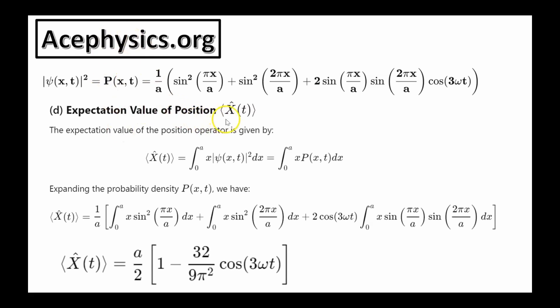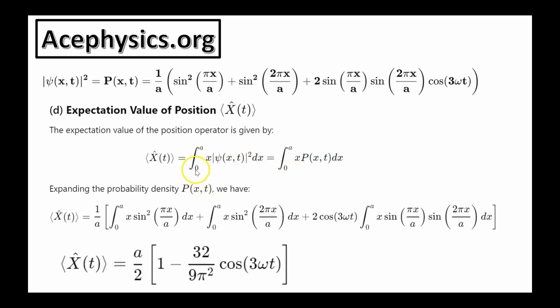Part D asks for the expectation value of the position operator — the average value of position. Unlike average energy, the average value of position does change over time. For this one-dimensional problem, we take the integral from 0 to A of x times psi squared dx. This equals x times the probability of x, which is intuitive: psi squared gives the probability density, so multiplying by x gives the average position. Substituting our expression for psi squared of x and t, multiplying by x, and integrating — the calculation is non-trivial — yields an expression for average x that changes with time, consistent with the oscillating probability distribution we saw.